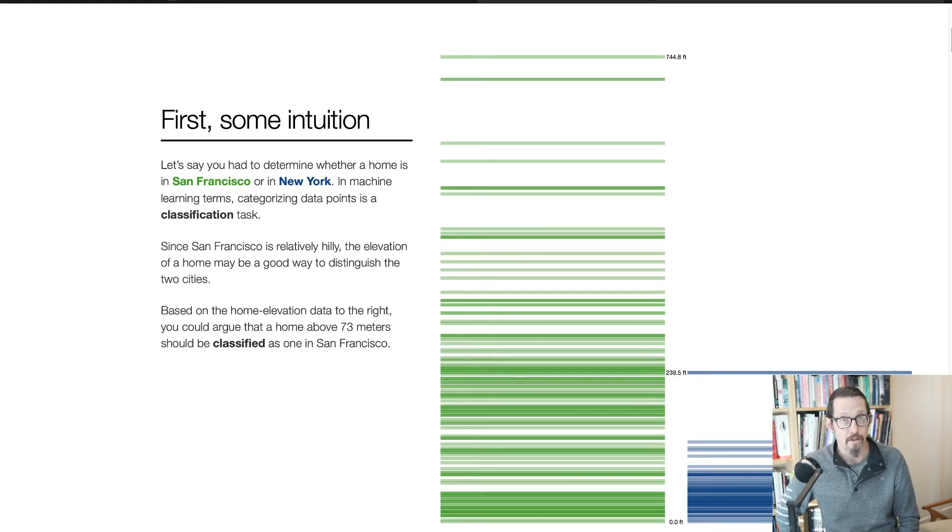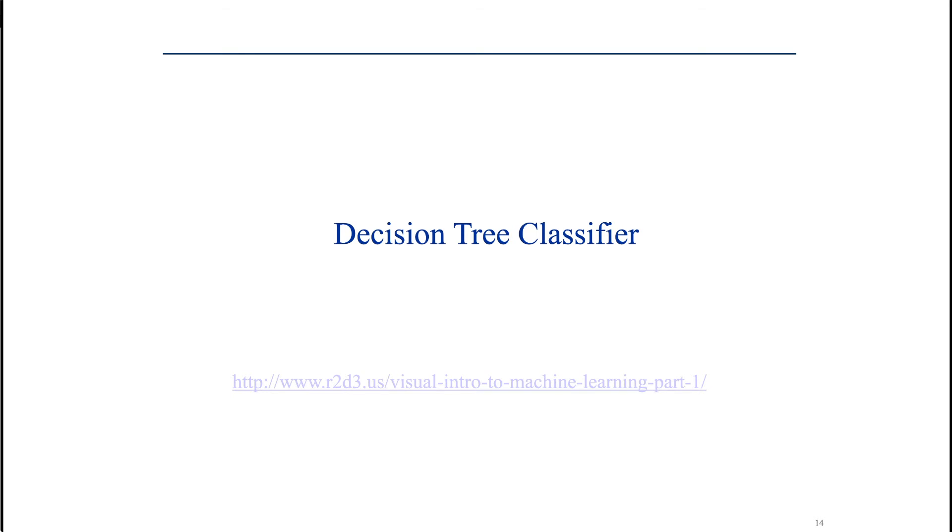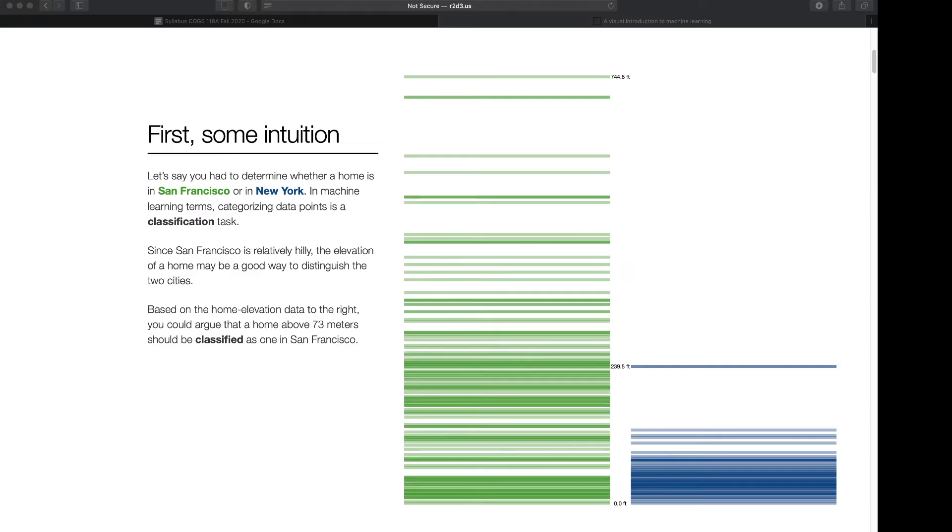So if our task is to classify based on the kind of data you might download from Zillow.com or Redfin or stuff like that, we're trying to classify whether a home is in San Fran or New York. For some reason, all the other data is there, but we just don't have the actual address of the house or apartment. It may seem a little silly, but the important thing is that we have a task. So an intuition is that San Francisco is relatively hilly. And even though they both start at the sea level, San Fran places get quite a lot higher, quite a lot quicker.